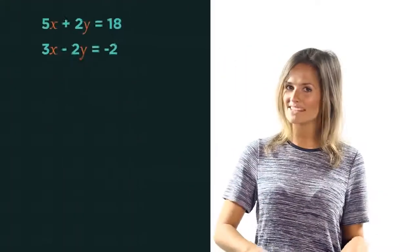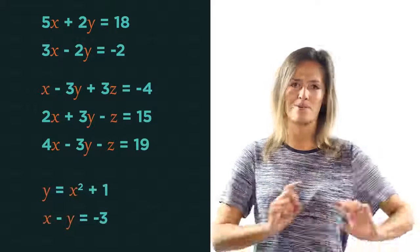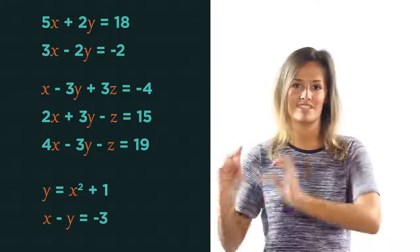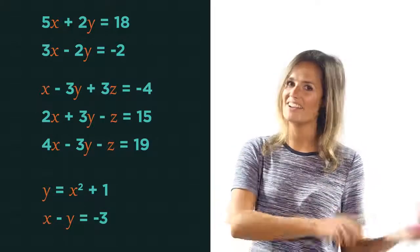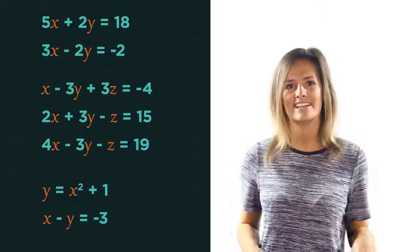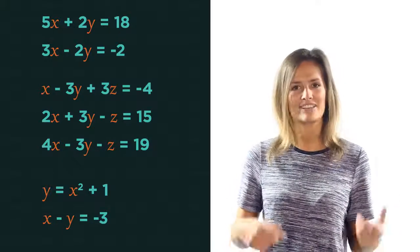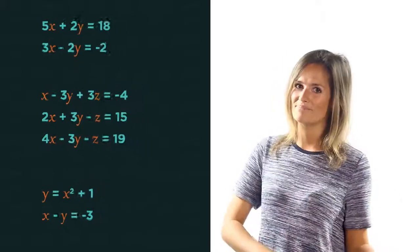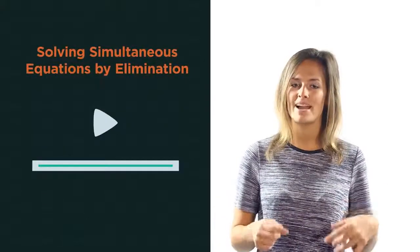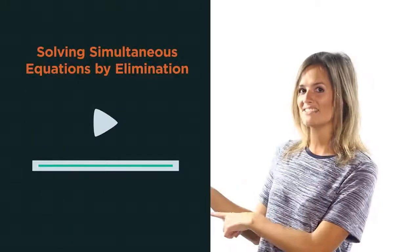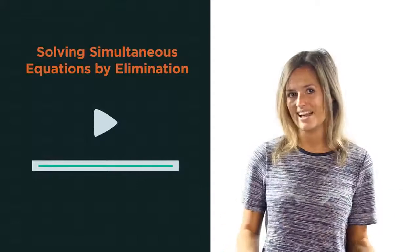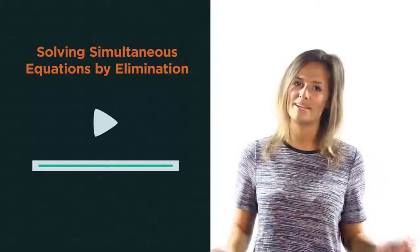In this video we're going to discover how to solve simultaneous equations by substitution. Simultaneous equations are two or more equations with two or more unknowns. They're called simultaneous because they need to be solved at the same time. We saw how to solve them by elimination in this video, however elimination doesn't always work.